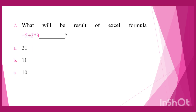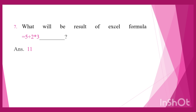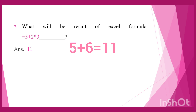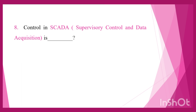Question 7: What will be the result of the Excel formula =5+2*3? Option A: 21, Option B: 11, Option C: 10. The result is 11. Following order of operations, we first perform multiplication: 2×3=6, then 6+5=11. The answer is 11.